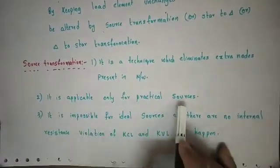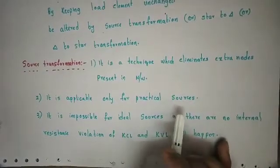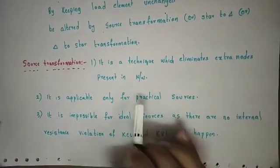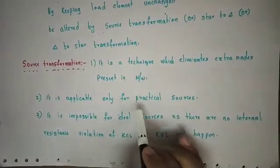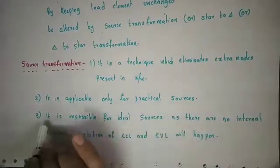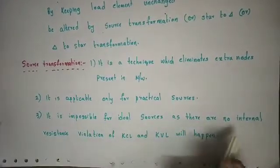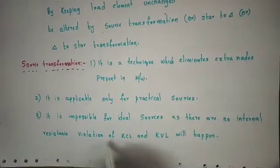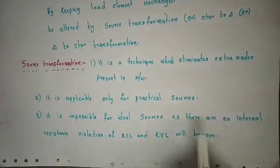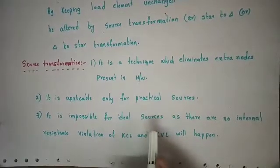Source transformation is applicable only for practical sources. It is impossible for ideal sources, as there is no internal resistance, and violation of KCL and KVL will happen. So source transformation for ideal sources is impossible.